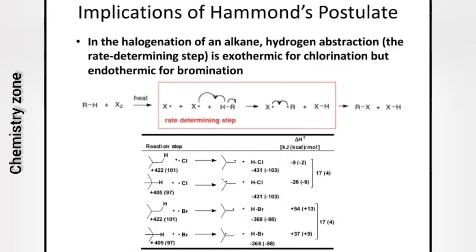In halogenation, an alkane is attacked by a halogen. The alkyl halogen single bond undergoes homolytic fission — meaning the bond electrons are equally distributed. A single bond is made by a pair of electrons (two electrons). In homolytic fission, each fragment takes one electron, giving one halogen radical and one alkyl free radical.